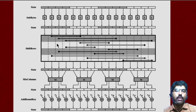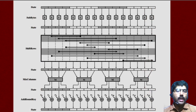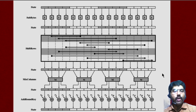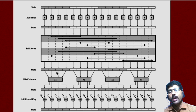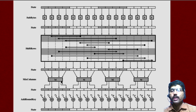The next step is called mix columns. A substitution that alters each byte in the columns as a function of all of the bytes in the column. It takes the bytes column by column and performs substitution — column-wise substitution. So it is called mix columns.